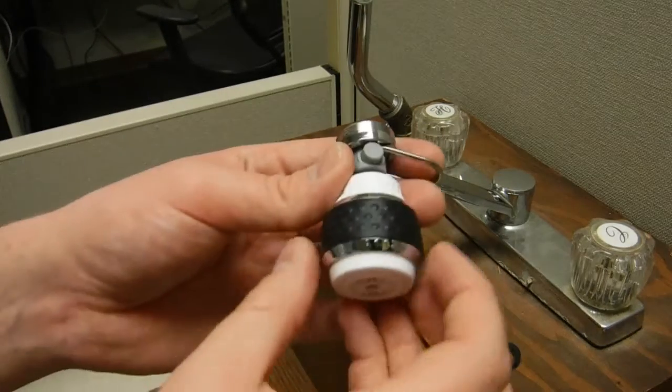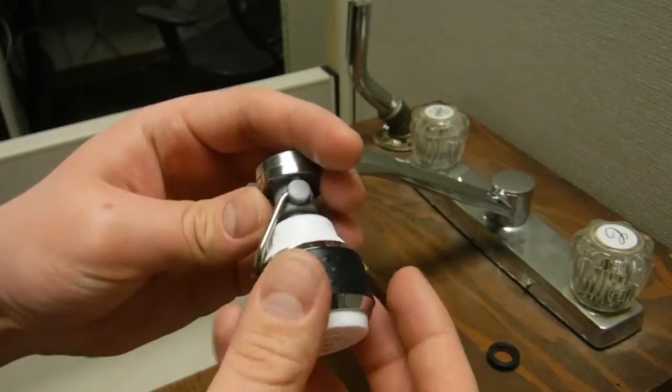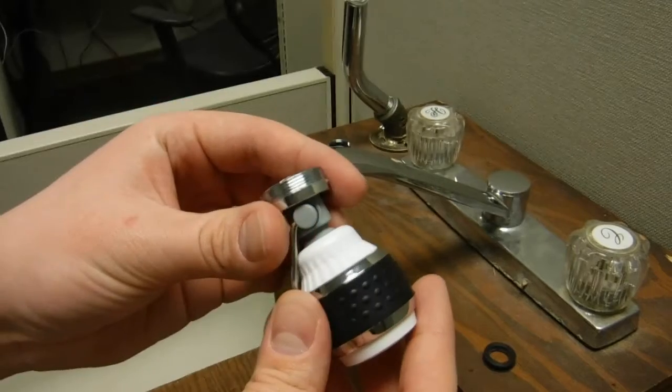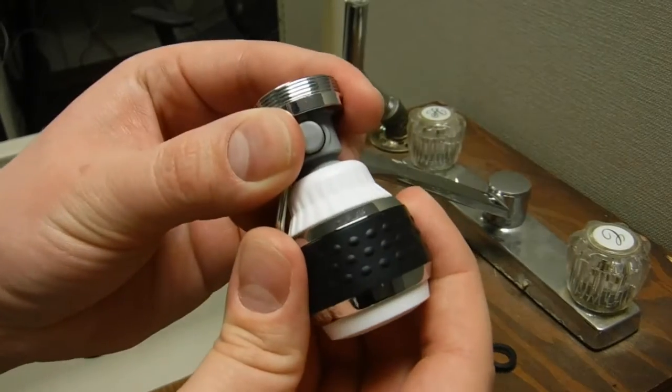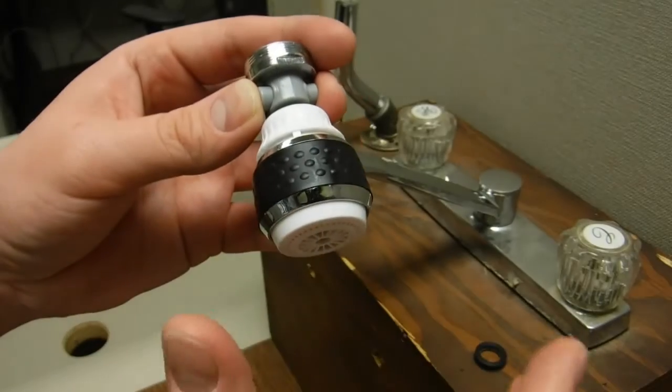Your kitchen aerator is a little bit different. It will have a normal stream like using a regular aerator, just running the sink. But if you pull it, it will turn into a shower spray.